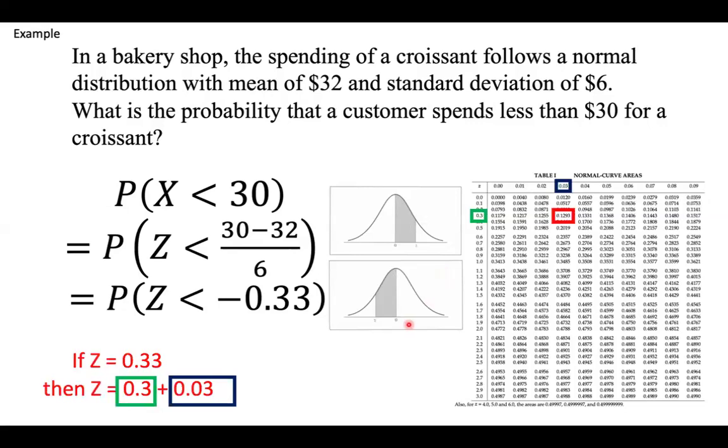So now, once again, let's revise. We have 0.33, and they can be broken down into 0.3 and 0.03. So for the first part, 0.3 in the tenth digit, we look at the column of the z-score.